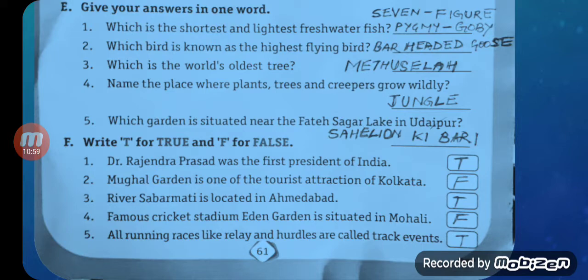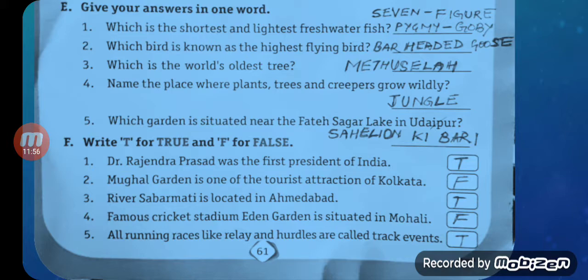Number four: Famous cricket stadium Eden Garden is situated in Mohali? False — F. Eden Garden is situated in Kolkata. Number five: All running races like relay and hurdles are called track events? True — T.